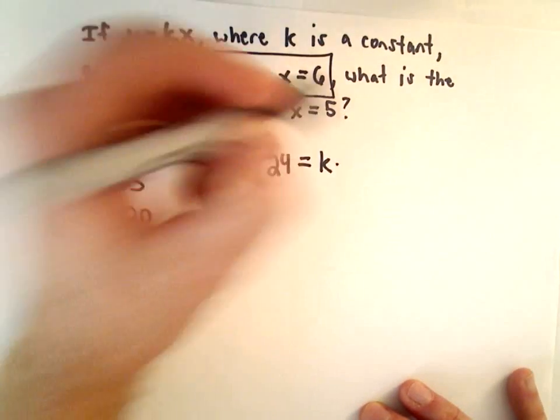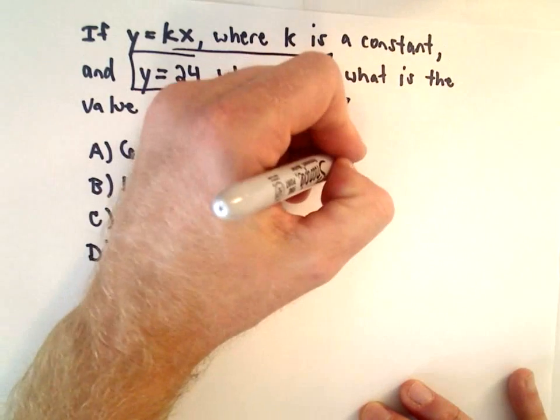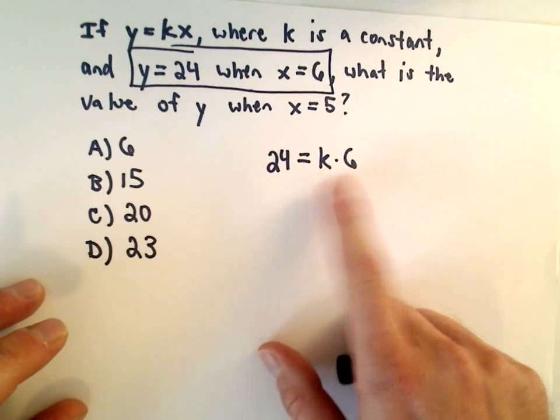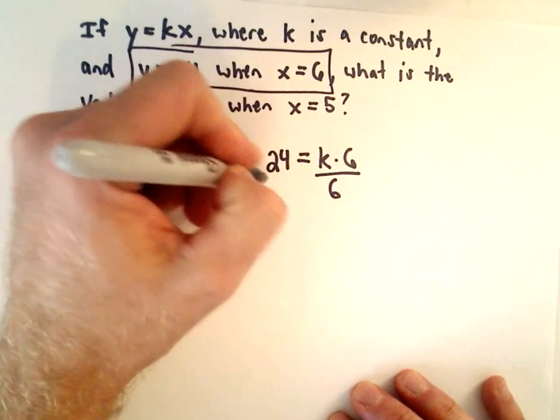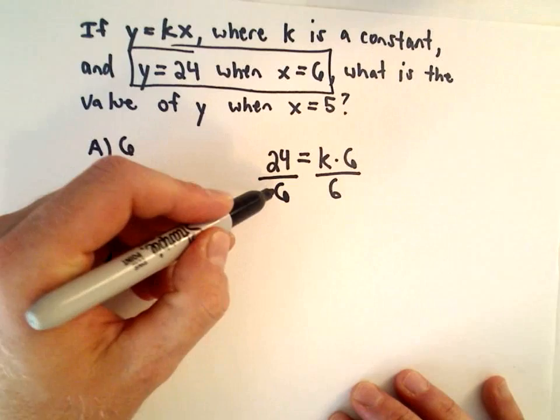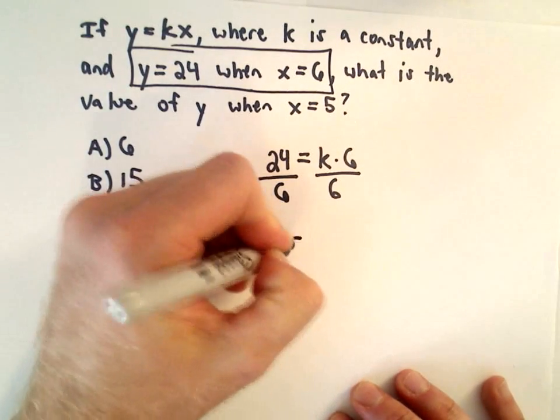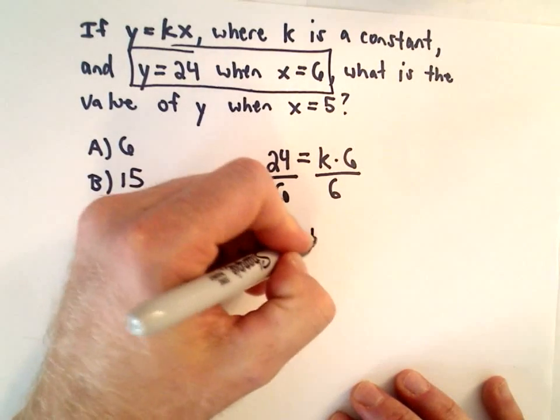We're trying to solve for k, so k multiplied by x which is going to be 6. k times 6, you could write this as 6k. To solve for k, I'm going to divide both sides by 6. 24 divided by 6 that's just going to give us 4 on the right side. We have k.